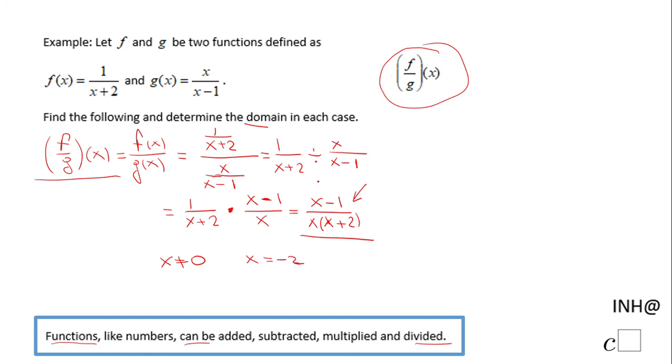But remember this result is the division of f over g, so g also needs to be defined. That means x cannot be 1 also.